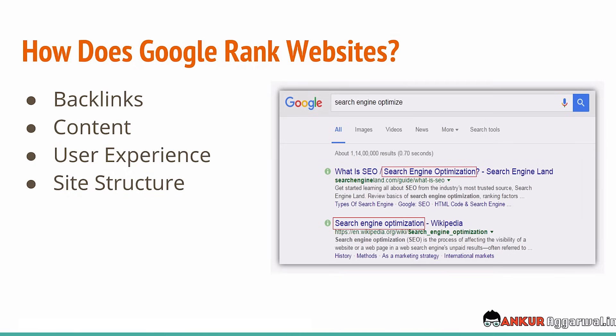One of the key metrics that Google considers while ranking a webpage is the number of backlinks. Backlinks are about how many different websites are linking to your webpage that you are trying to rank on Google search results. So if you write an article on 'best credit card in India' and it gets mentioned on 30 different websites with a link back to your article, then you have 30 different backlinks. We'll be talking about backlinks in the next video.